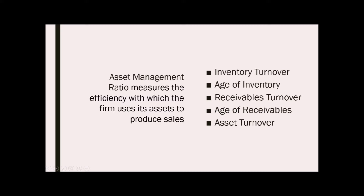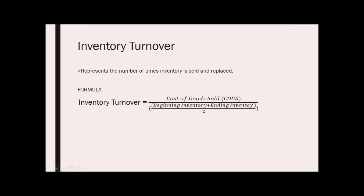First, the inventory turnover. If your company sells physical goods, this is the most important asset management or turnover ratio. It represents the number of times inventory is sold and replaced, and also shows how well companies are managing their inventory. One way to calculate this is to simply take cost of goods sold and divide that by the average or the ending inventory, whichever is available.